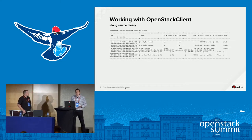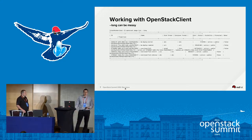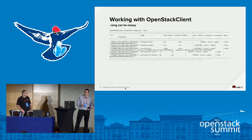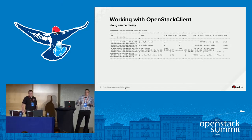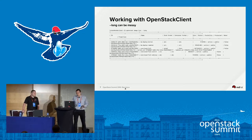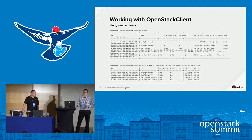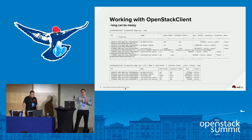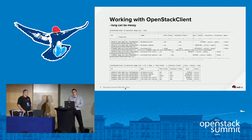OpenStack Client introduced the --long flag, available in any OpenStack Client command. It gives you not only the information you used to see in the legacy CLI but extends even further. It can be a lot of output, but there's a solution: you can use the -c flag, which stands for column, to limit output to only the columns you're interested in. So if you have scripts using the old CLI, you can adapt them with -c parameters.